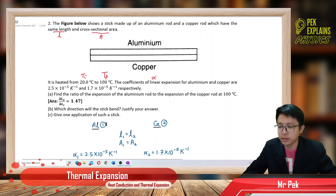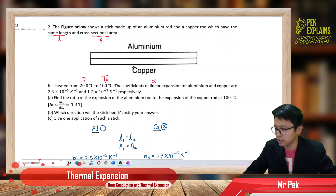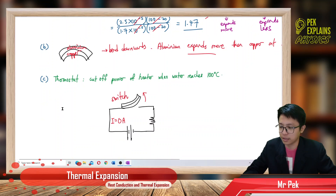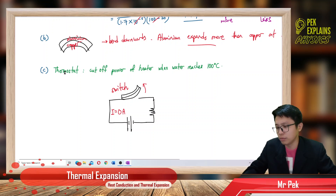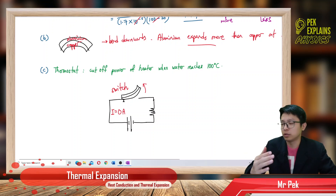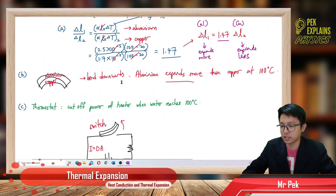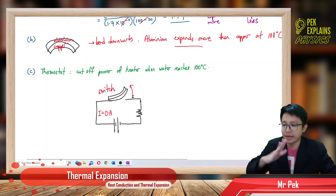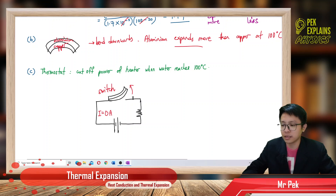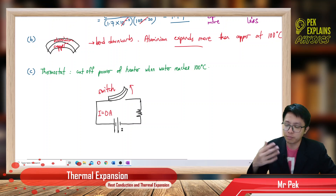Now, one application of such a stick — aluminum joined with copper — is the thermostat. We can see thermostats in water heaters or irons. When the water is boiling at 100 degrees Celsius, the thermostat will bend in this direction because aluminum expands more than copper. This thermostat acts as an automatic switch — when it bends, the circuit is cut off, no current flows, and the heater's power is cut off, stopping the boiling.